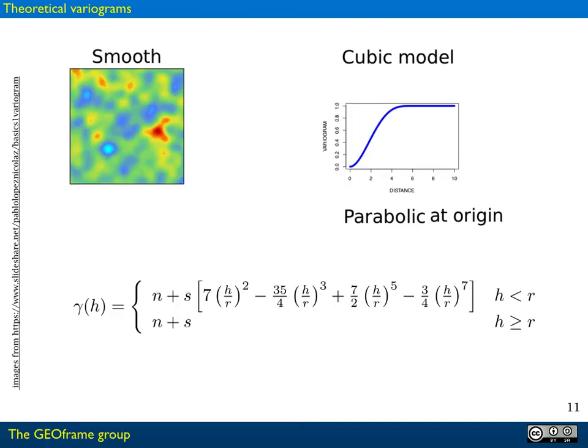There are other models like the cubic model here, same recipe. We have the variogram is n plus s times an expression. Here is a seven-order polynomial and the model is called cubic model. But the origin is more or less parabolic. Just the first term in the square parenthesis counts, so it's pretty smooth. The points close by have similar values of the quantity that is investigated.